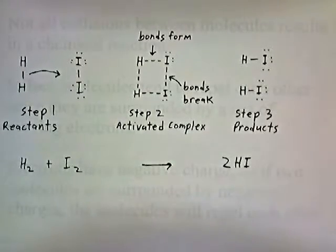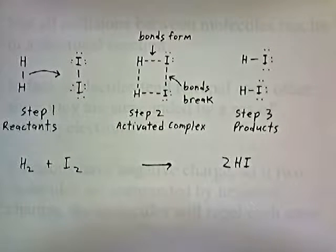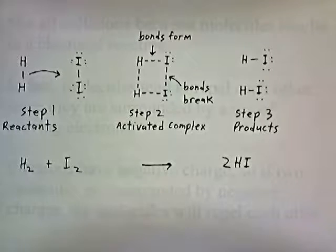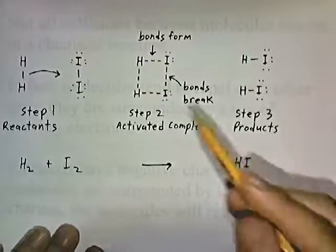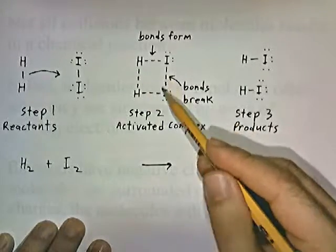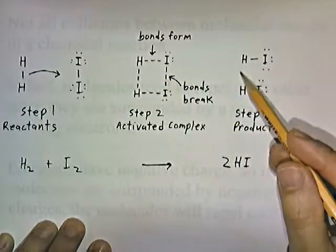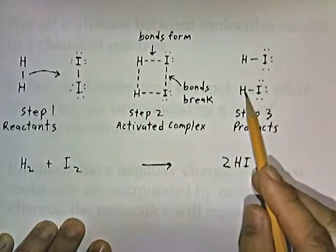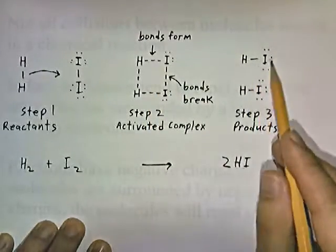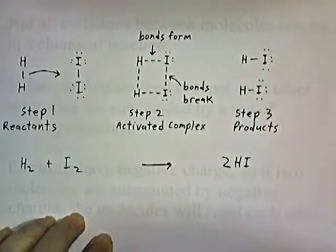In step three, the bond between the hydrogen atoms is completely broken. The bond between the iodine atoms is also completely broken. The bonds between the hydrogen and iodine atoms are fully formed and the reaction is complete. These bonds are completely broken and gone, and these bonds here are fully formed. So now we have hydrogen iodide.